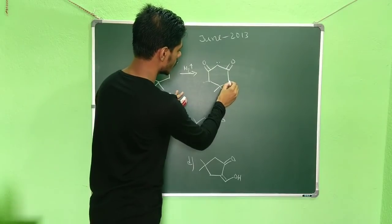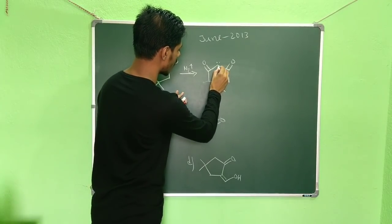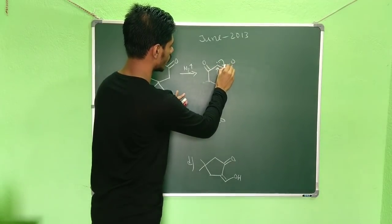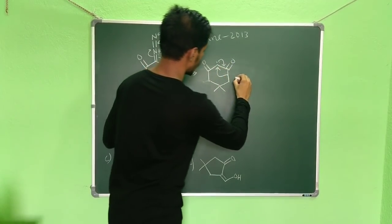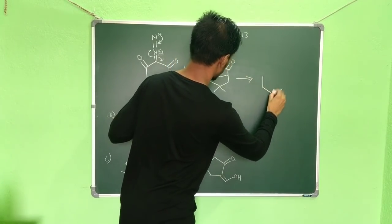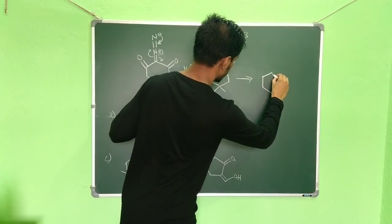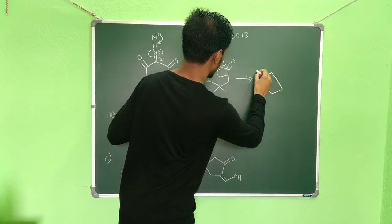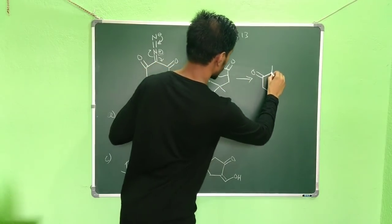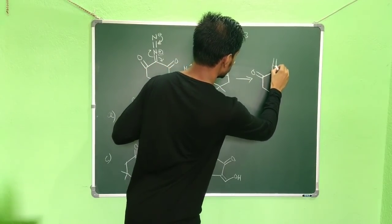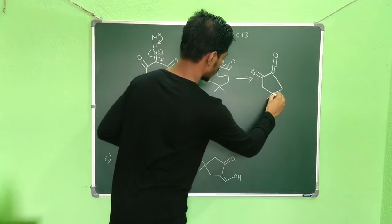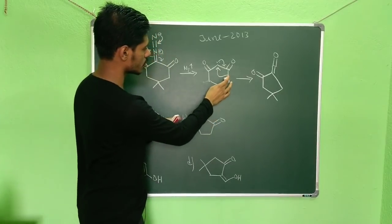If this alkyl group migrates from this side, it will develop a negative charge and then move over, so you will get this structure. Here the carbonyl group remains intact, and over here you get a ketene. So this ketene is what you get from this rearrangement step.